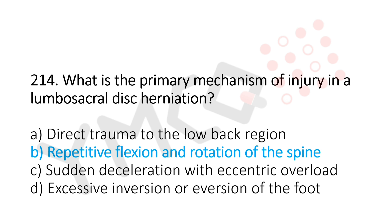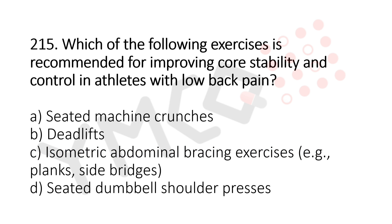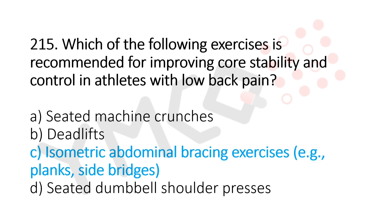Question 215: Which of the following exercises is recommended for improving core stability and control in athletes with low back pain? Option A: seated machine crunches. Option B: deadlifts. Option C: isometric abdominal bracing exercises. Option D: seated dumbbell shoulder press. The answer is option C, isometric abdominal bracing exercises.